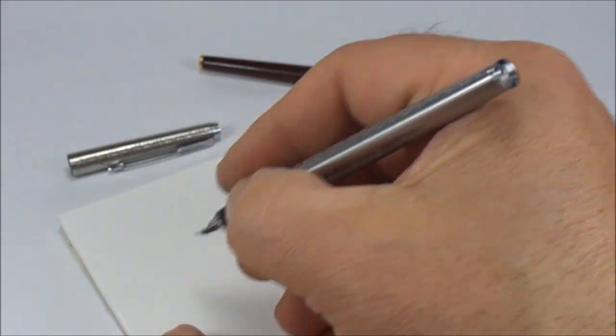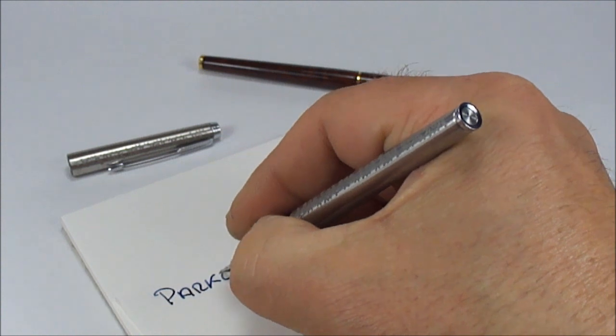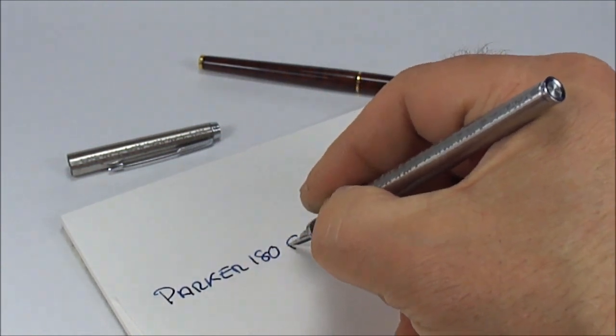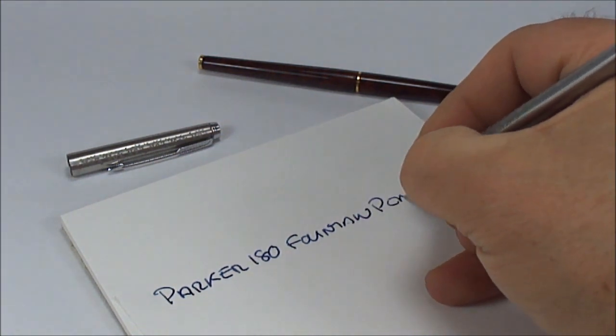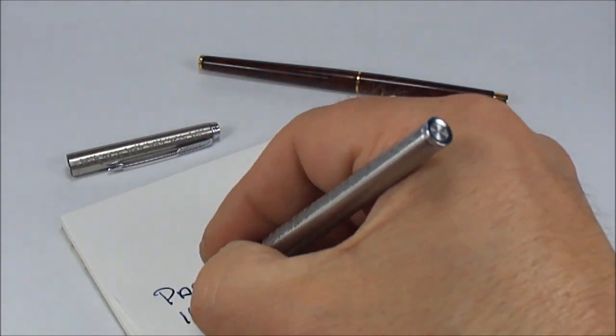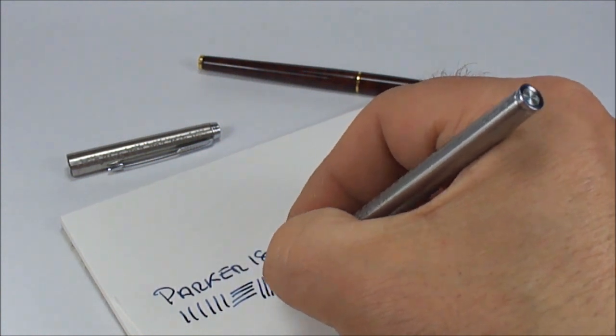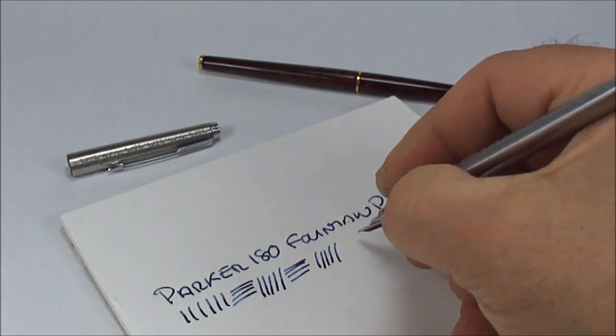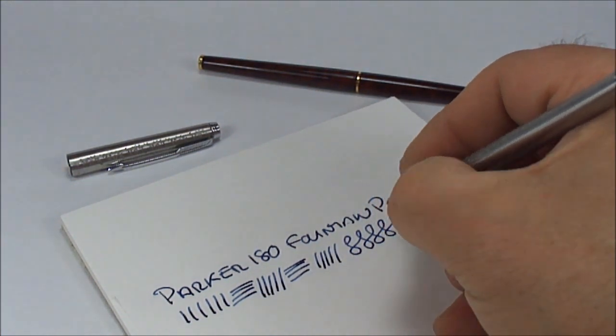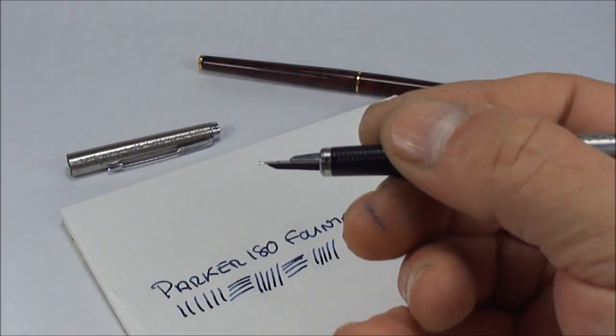Now we're writing with the Parker 180, using the normal side. You can see it's a very smooth writer, writing with a medium line as indicated on the nib.